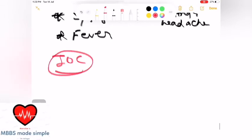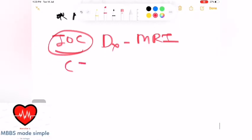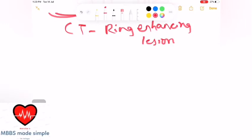Investigation of choice - diagnostic test is MRI or CT showing ring enhancing lesion. That is diagnostic.